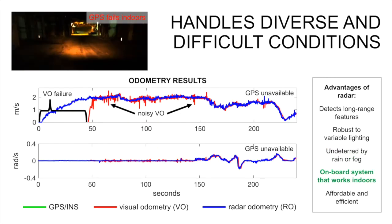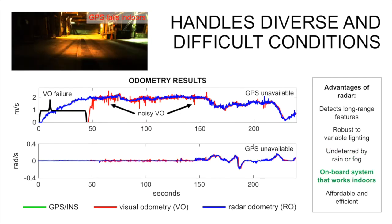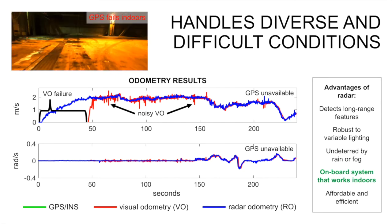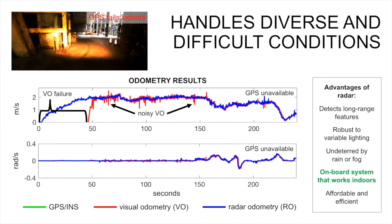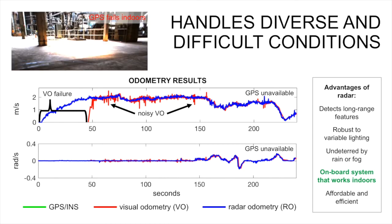In this crowded and dark indoor environment, GPS is unavailable. Visual odometry is highly noisy and periodically fails, while radar odometry remains robust.